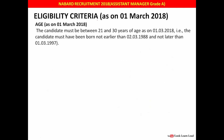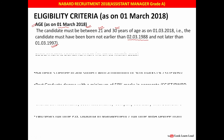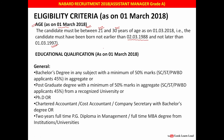The eligibility criteria are divided into age and education. For age, 1st March 2018 is the reference date. The candidate's age should be between 21 to 30 years as on 1st March 2018, meaning the candidate must not have been born earlier than 2nd March 1988 or later than 1st March 1997. Both dates are inclusive.